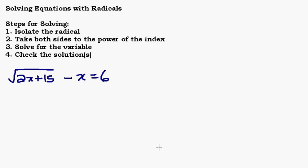In this video we're going to do another example of solving equations with radicals. This is a more complicated problem involving more steps. Let's recall the steps for solving: first we want to isolate the radical, getting it by itself on one side of the equal sign. Then we're going to take both sides to the power of the index. In this case we have a square root, so we're going to square both sides. Then we'll solve for the variable and check our solutions.